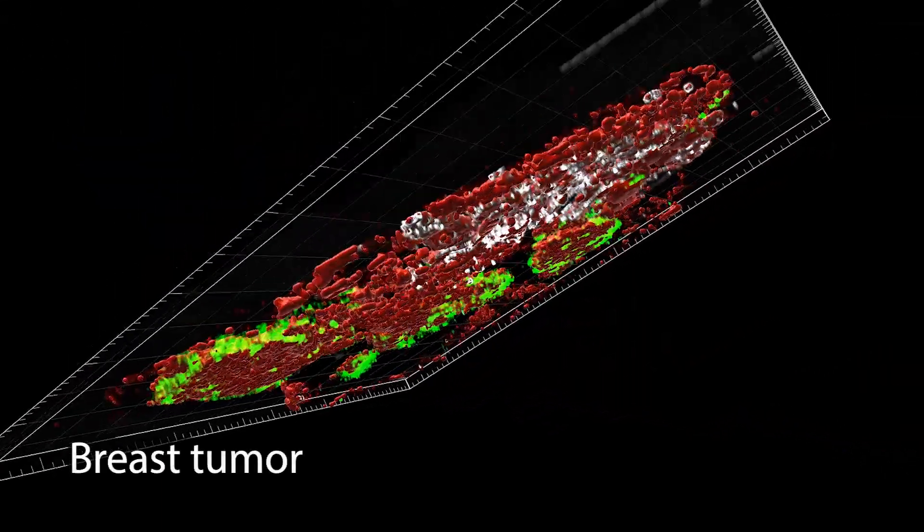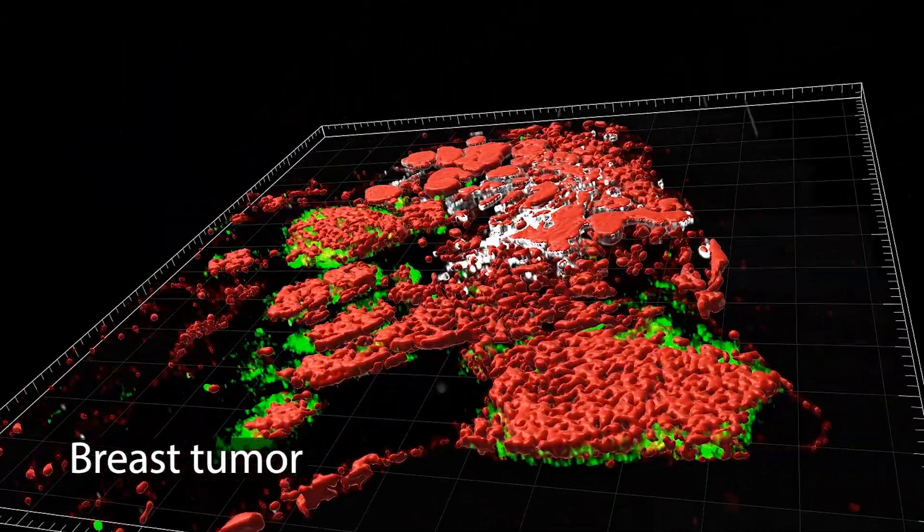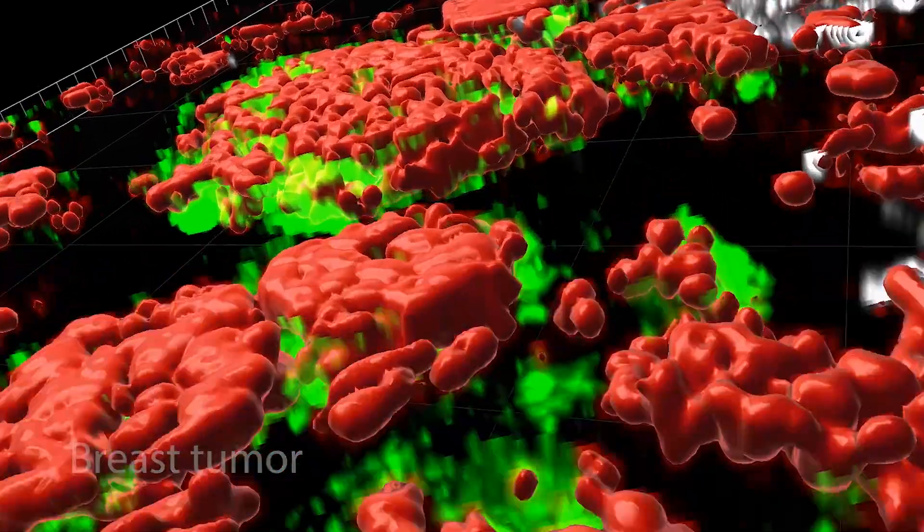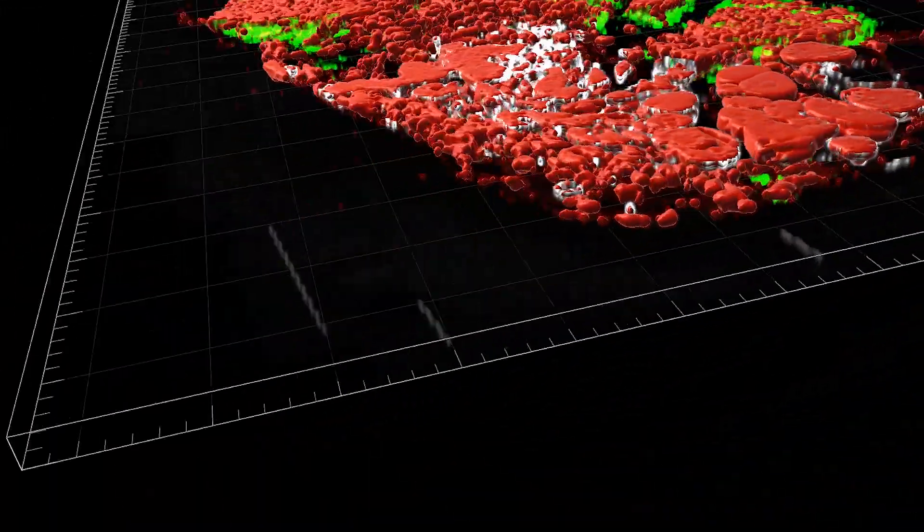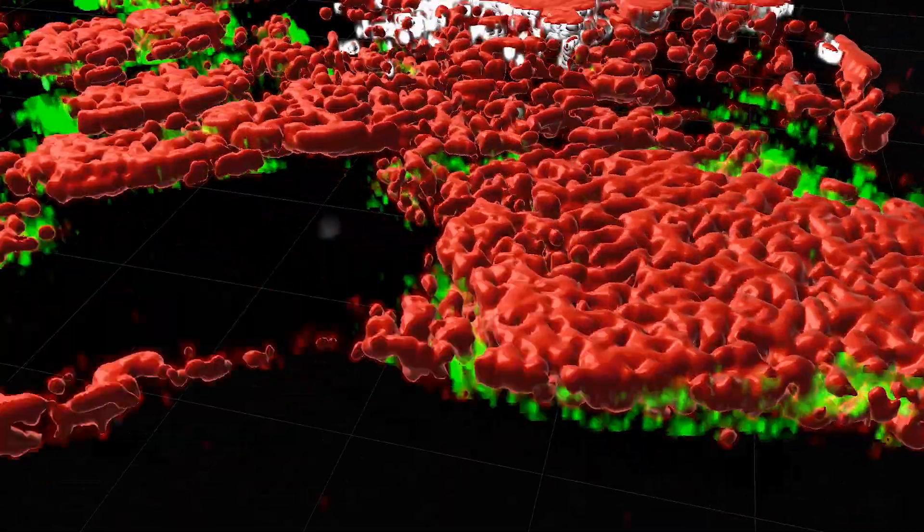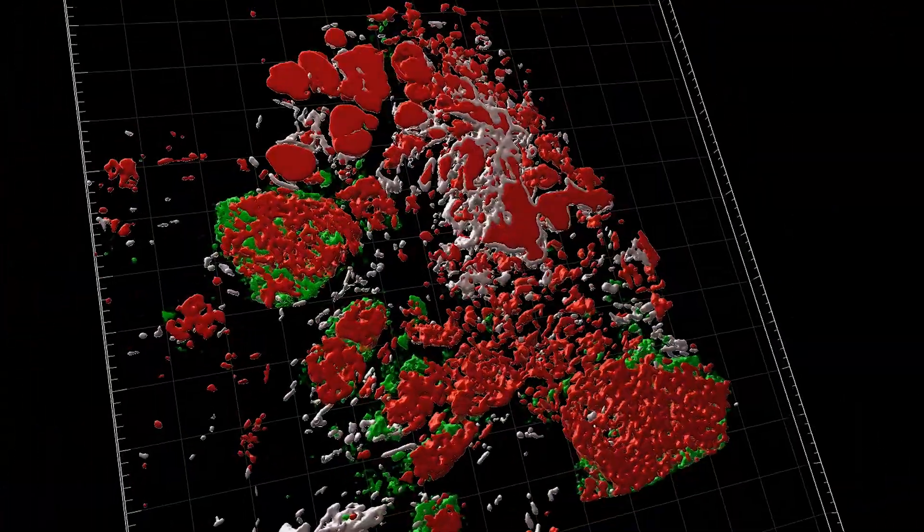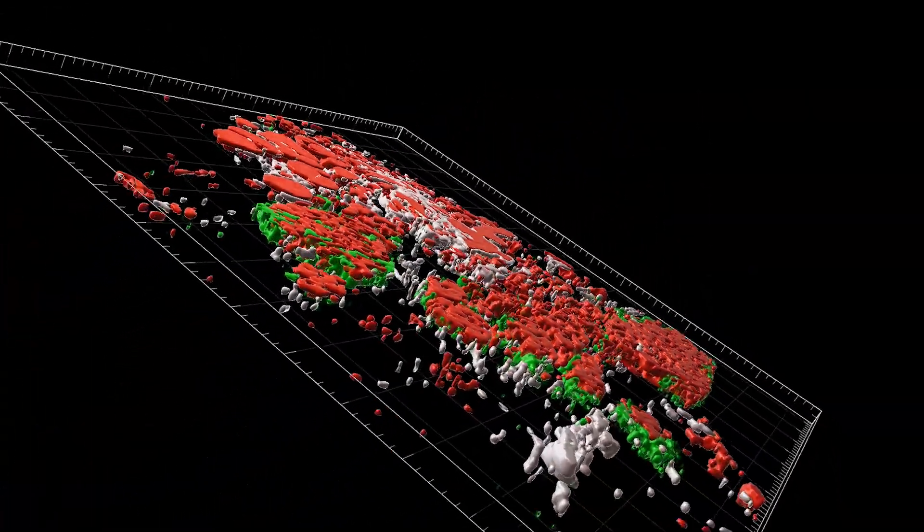Researchers at WashU Medicine have generated detailed views inside patient cancers in three dimensions. The new maps reveal a tumor's structure and function down to the single cell, and how all that may change when a tumor spreads.